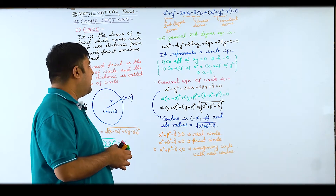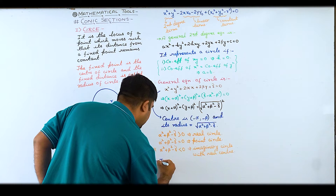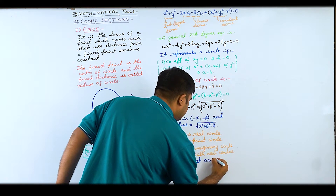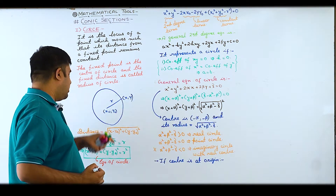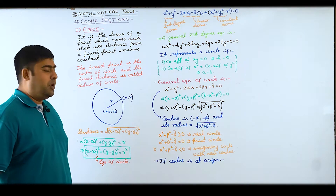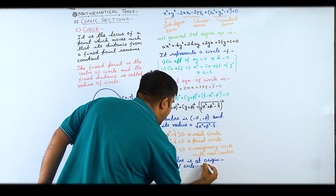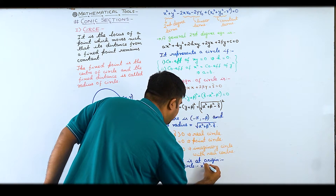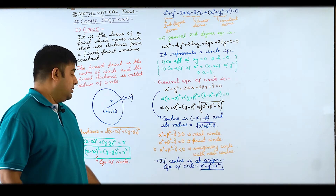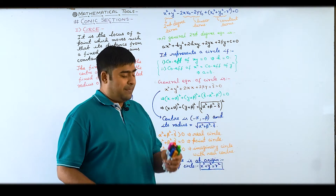So this is the general equation of the circle, and we can convert it to standard form. If the center is at the origin, i.e., x₀ = y₀ = 0, we simply get under root (x² + y²) = r, so x² + y² = r². This is the most important form of the equation that we really need when the center is at the origin.